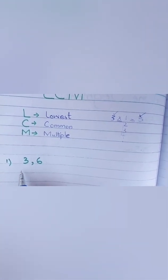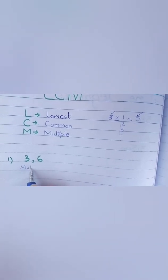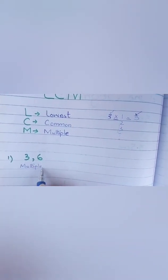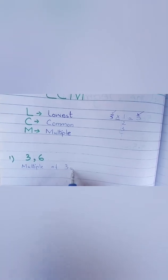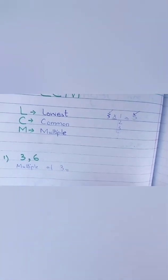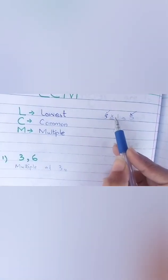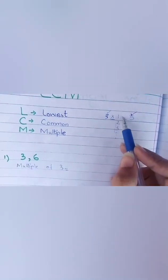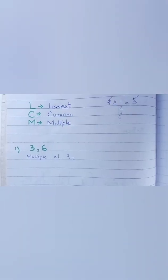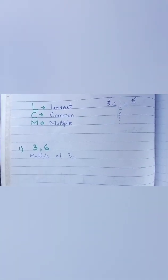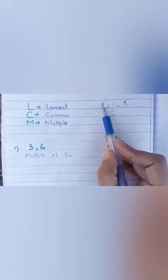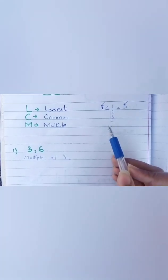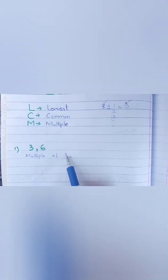Aap log sabse pehle kya karenge, likhenge multiple. Multiple of three, three ke multiple kaun se hain, aap log uska table likhenge. Jaise aap log ne yaha pe multiple karna hai na, us number ko jo number given hoga, aap log uska multiple kaise nikalenge, aap log natural number ke saat multiply karayenge, toh aap ke paas us number ke multiple aa jayenge.